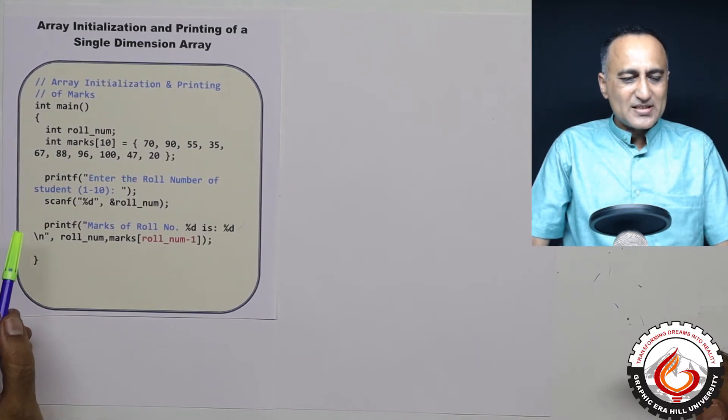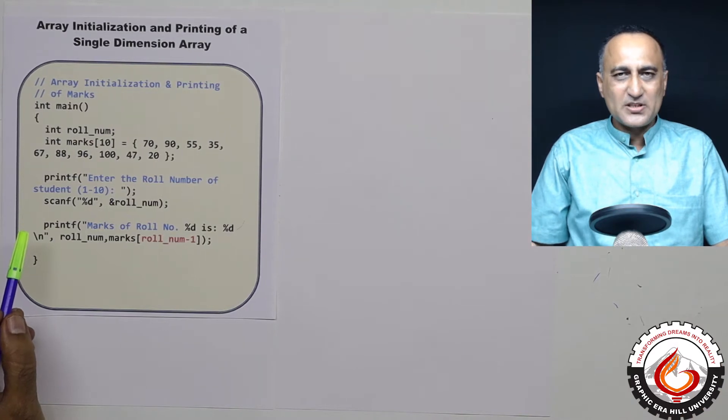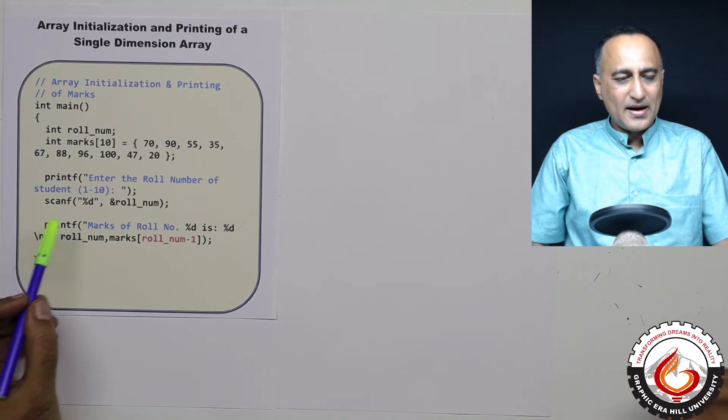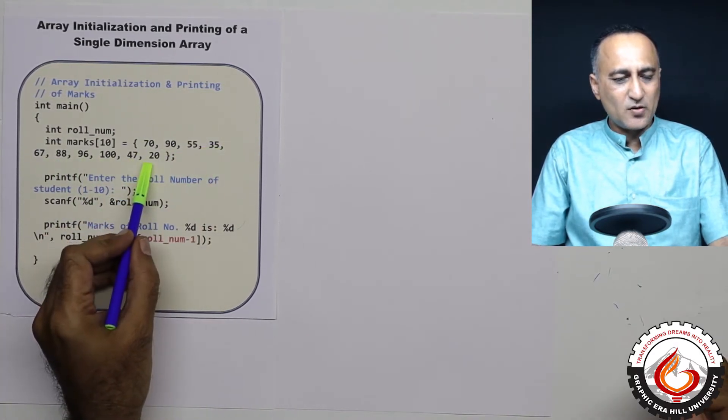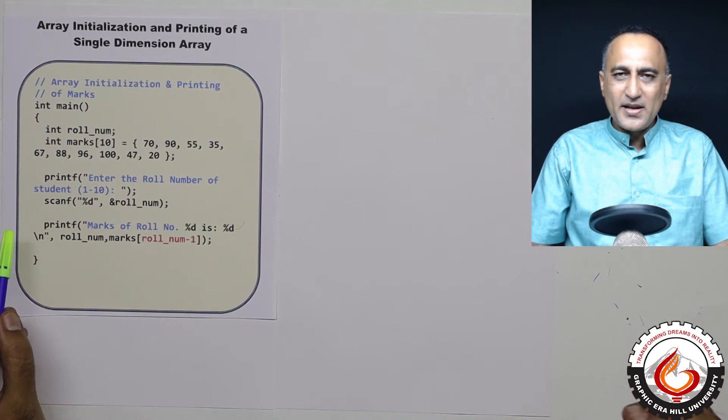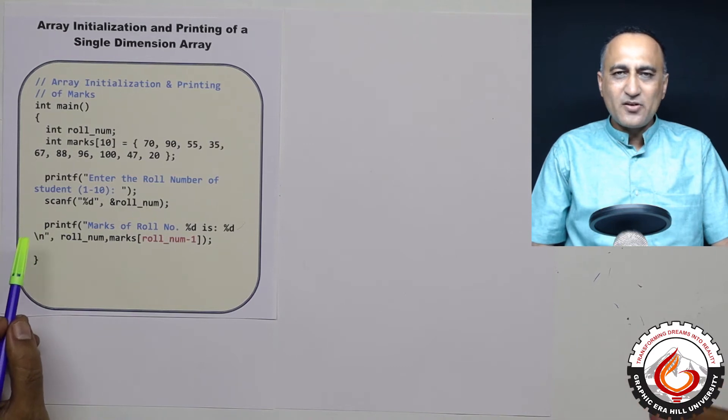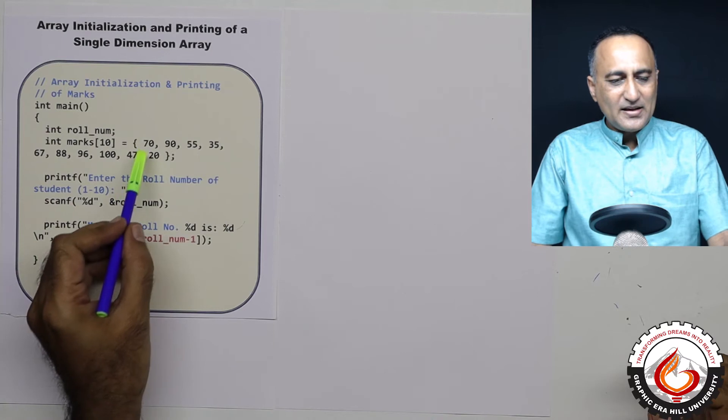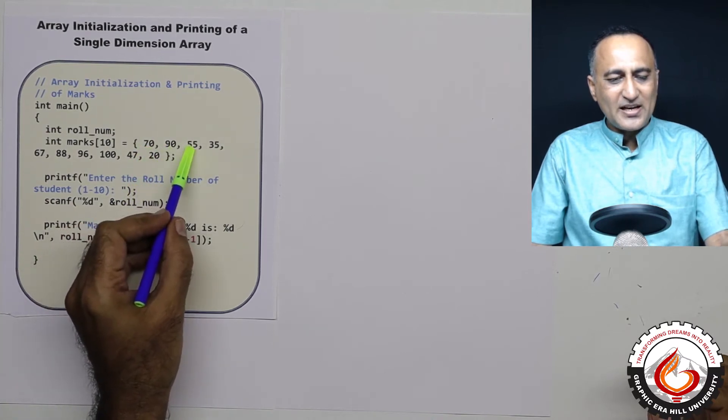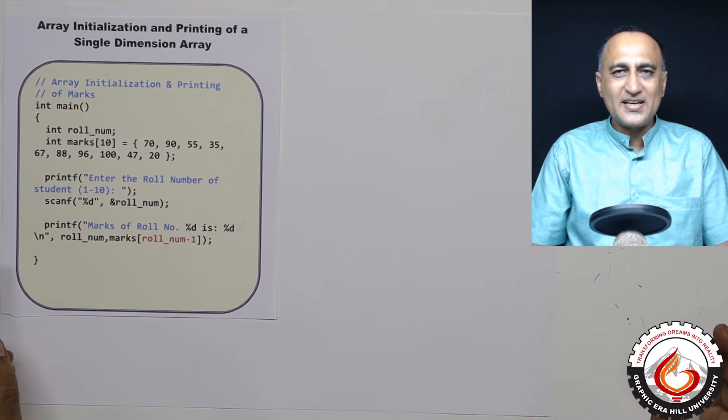So what this array is doing is, let's say the indices or the subscripts represent the roll number of a student and all these are marks in a subject. Let's say I only have 10 students in my tutorial class and I have given them roll numbers starting from 1 to 10, and each of these values 70, 90, 55 represent the marks they have got in a test of English.